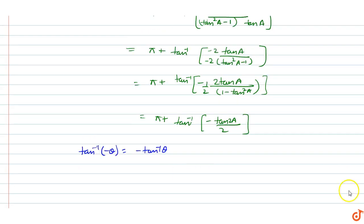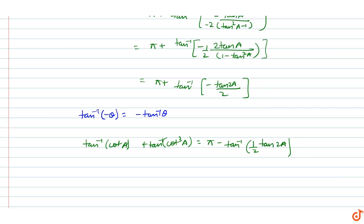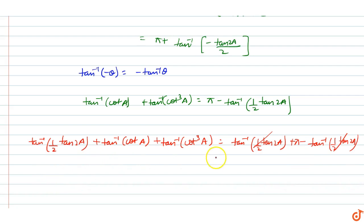Since tan inverse of (-theta) equals minus tan inverse theta, we get tan inverse of cot a plus tan inverse of cot cube a equals pi minus tan inverse of (half times tan 2a). So the original expression tan inverse(½ tan 2a) + tan inverse(cot a) + tan inverse(cot cube a) becomes tan inverse(½ tan 2a) + pi - tan inverse(½ tan 2a), and these two terms cancel, giving us the value pi.